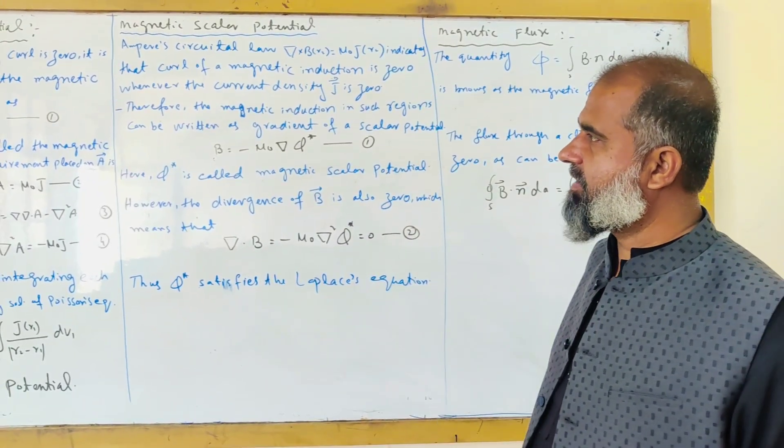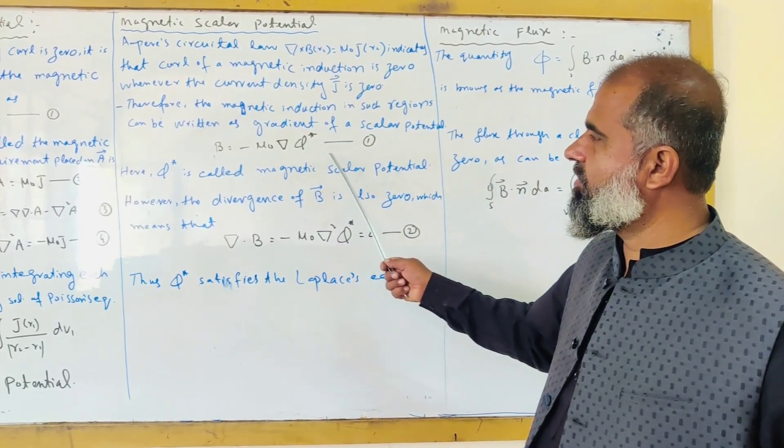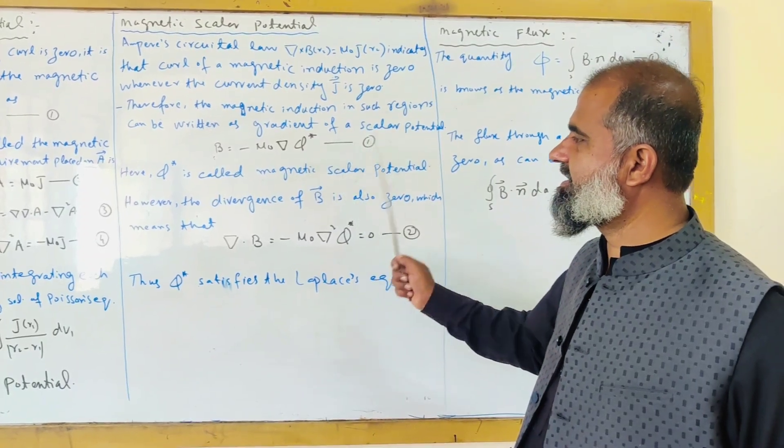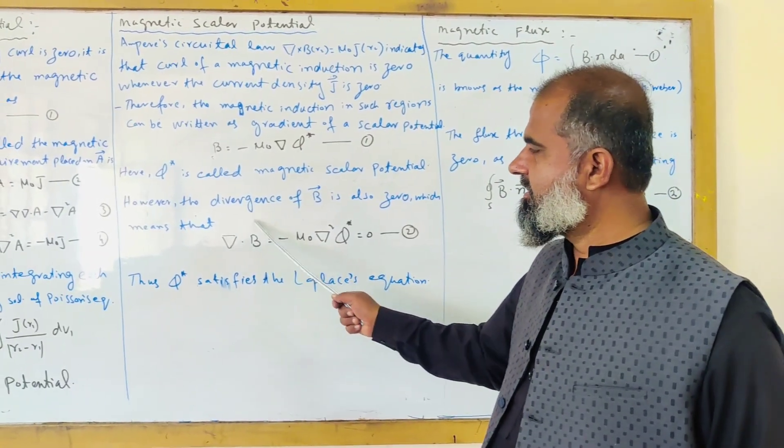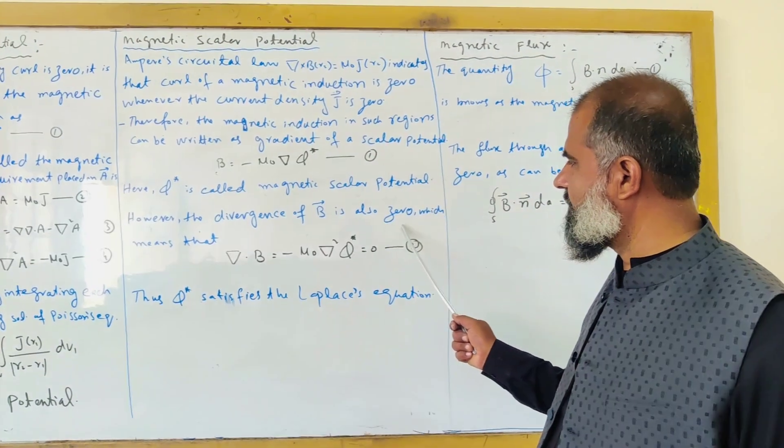Phi star is called the magnetic scalar potential. Just like the magnetic vector potential, we have obtained the magnetic scalar potential. However, the divergence of B is also zero.